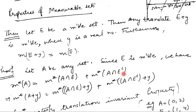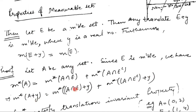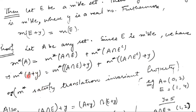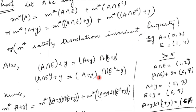Further, we know that the outer measure satisfies the translation invariant property, so we can replace each set with plus y. We write that the outer measure of A plus y equals the outer measure of (A intersection E) plus y, plus the outer measure of (A intersection E complement) plus y.